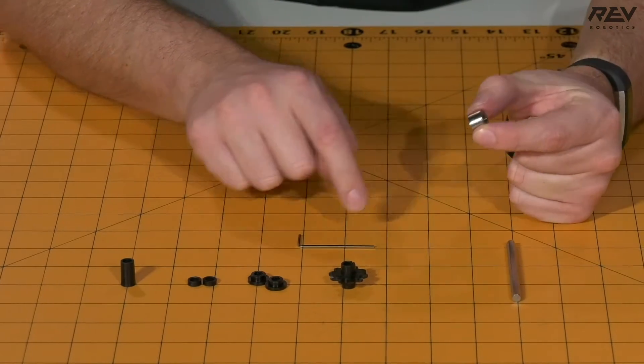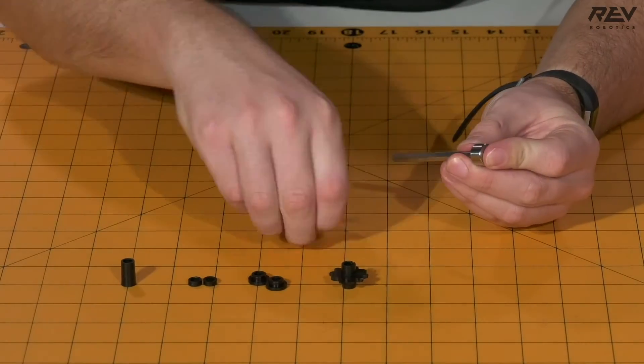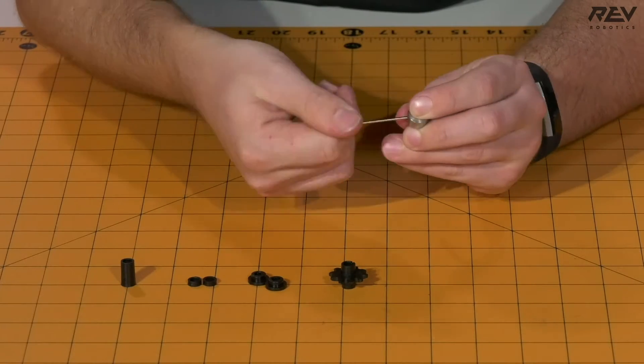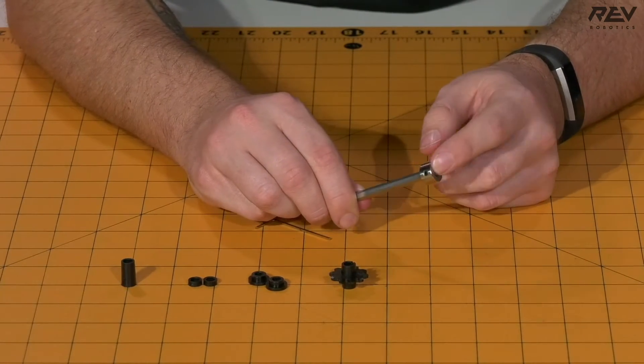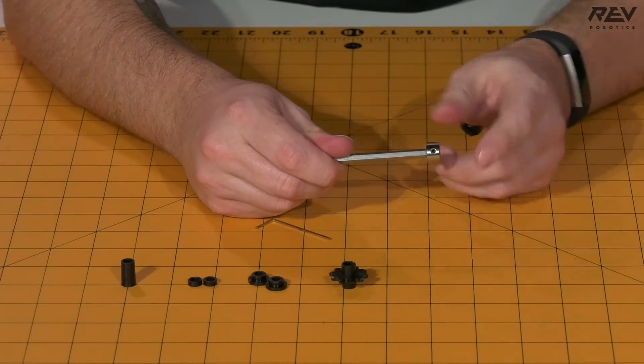To begin, take your shaft collar and hex shaft and put the shaft collar on the end of the hex shaft. Tighten it down with the Allen wrench. Make sure the shaft collar is flush with the end of the hex shaft, as all measurements will be based off the shaft collar.